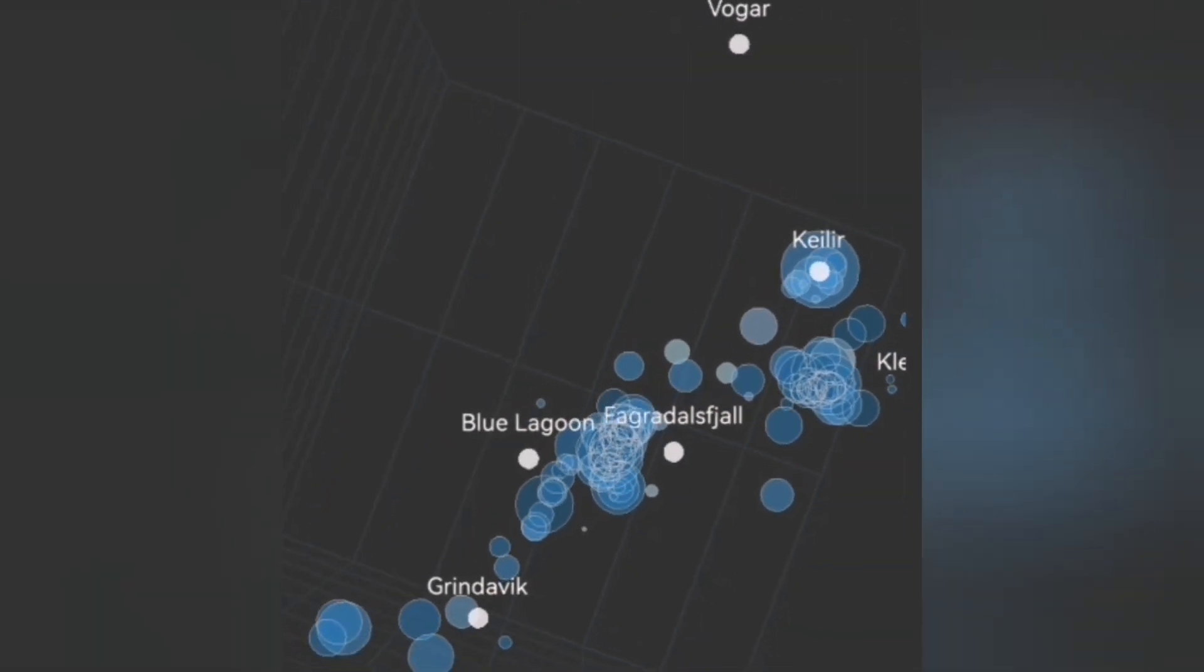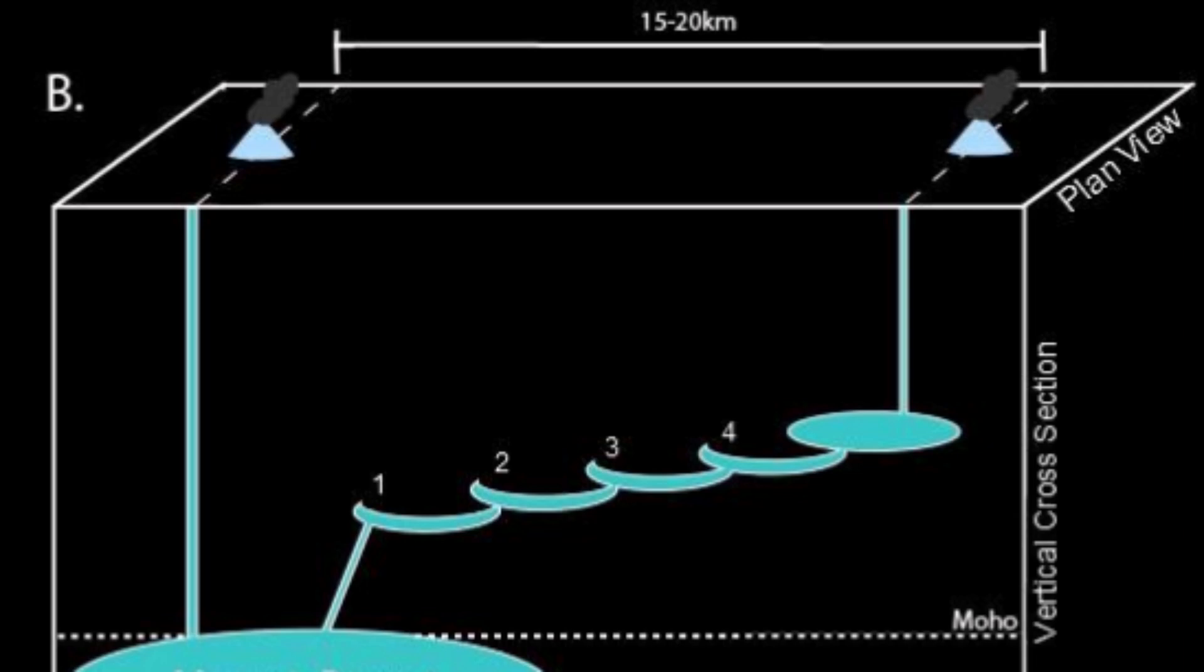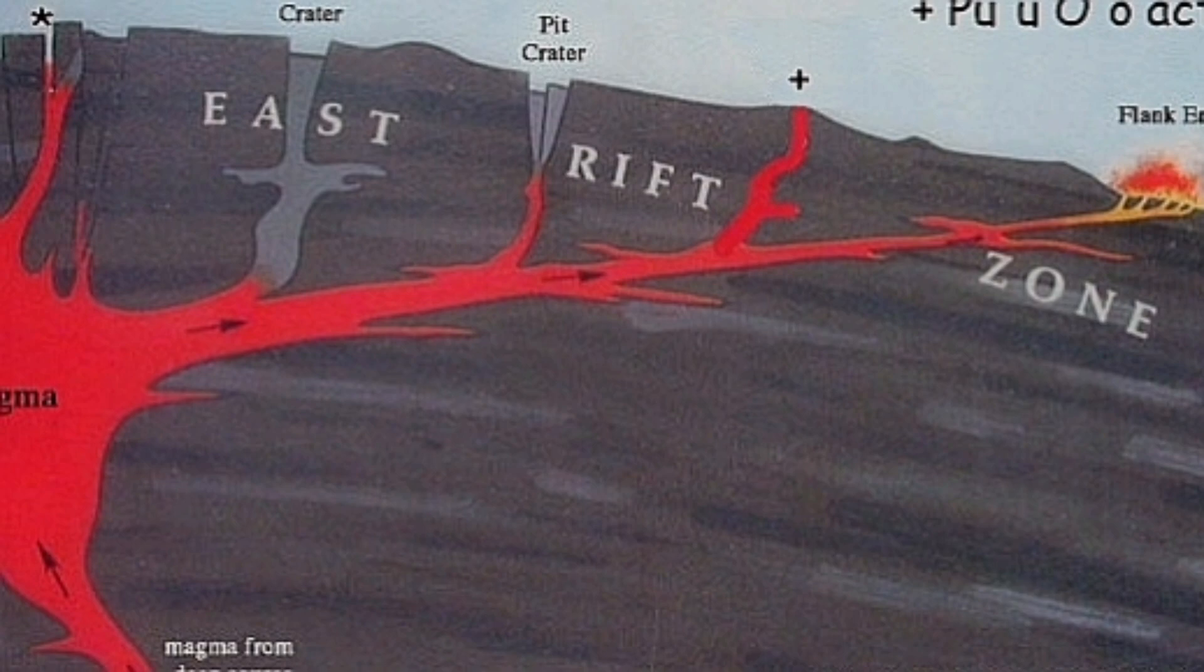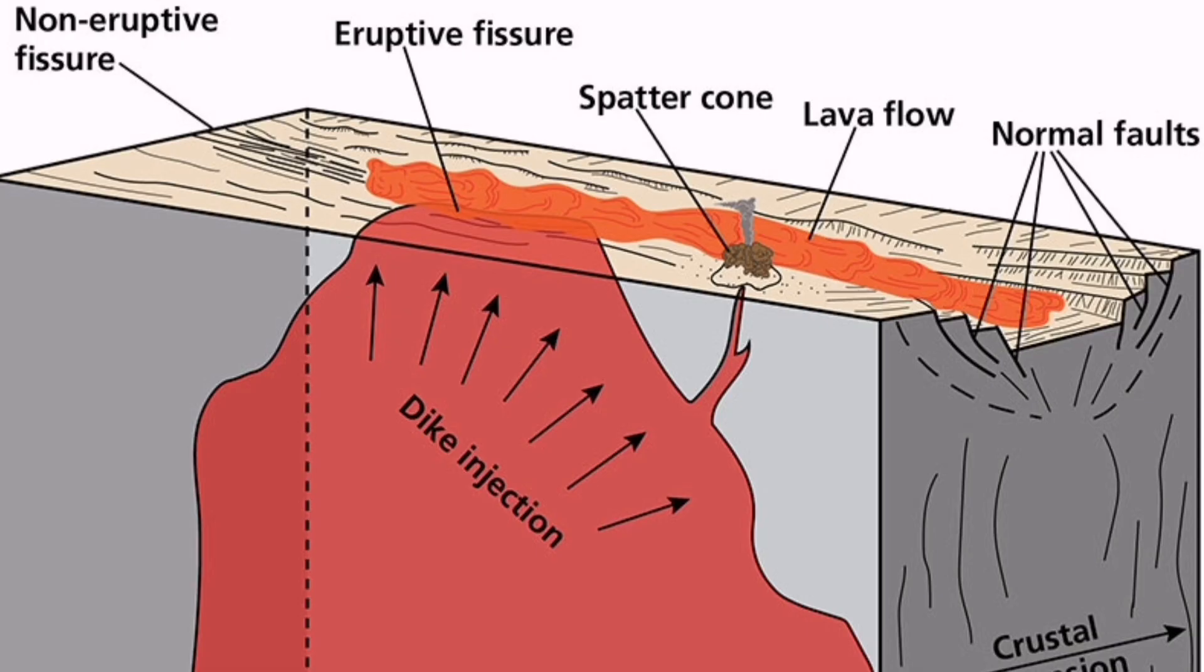This is the diagram or cartoon showing what I mean by this transgressive seal moving from Svartsengi at an angle toward the town of Grindavik, the vicinity, north part of it.